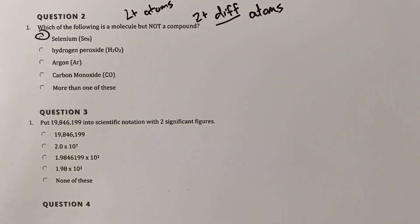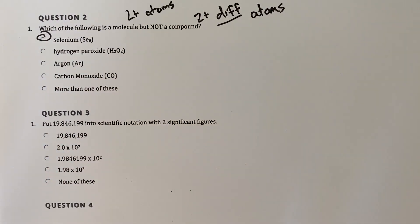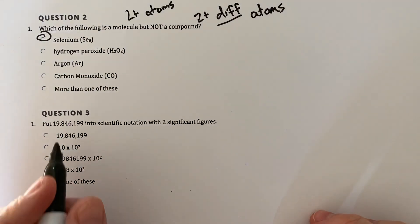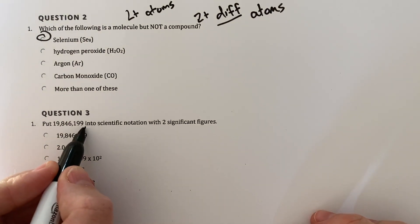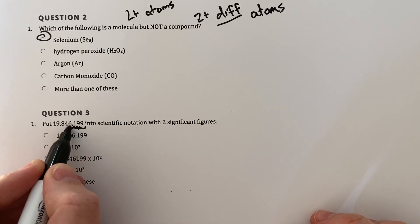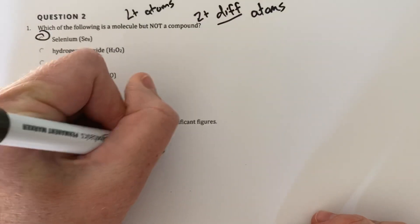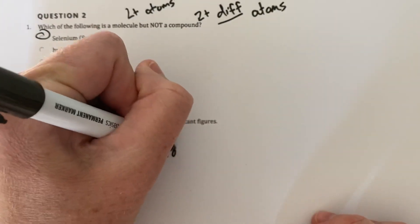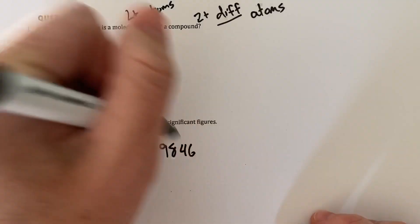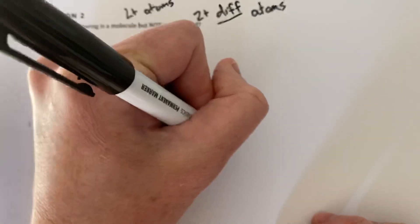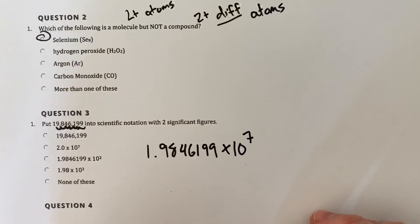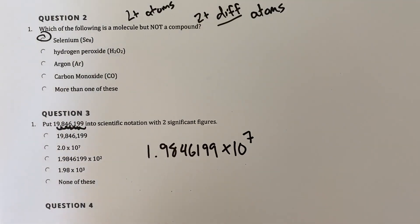Number three, it asks you to put this number in scientific notation with two sig figs. So one of the things I really like to do is just take that number and immediately put in scientific notation and then figure out the sig figs. So if I did that, I'd put the decimal right here and move it one, two, three, four, five, six, seven times. So I'd have 1.9846199 and again I moved it seven times. So times ten to the seven.